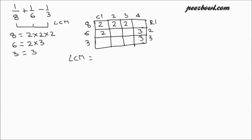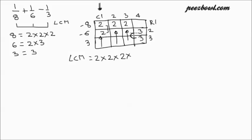The only condition is that if in a column we have more than one instance of the same number, then we need to consider that number only once. In column number 1, as we had 2 appearing twice — for 6 and for 8 both — so we consider this 2 only once. In column number 2, we have only 2, so we consider that. Same for column 3. For column number 4, we have 3 appearing twice in row number 2 and row number 3 both, so only one instance of 3 is considered. After multiplying, we find it is 24. So LCM of 8, 6, and 3 is 24.